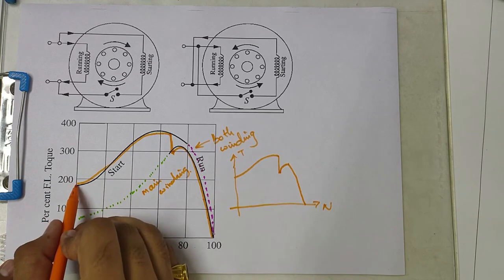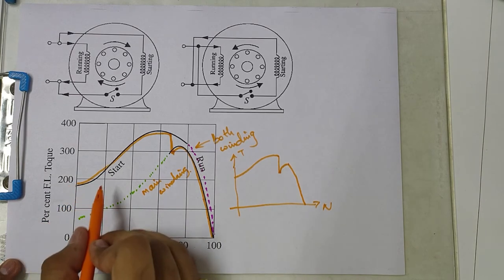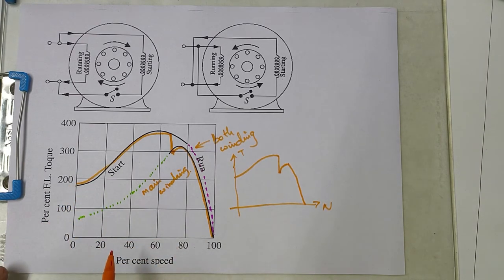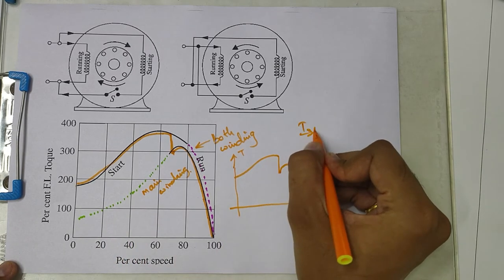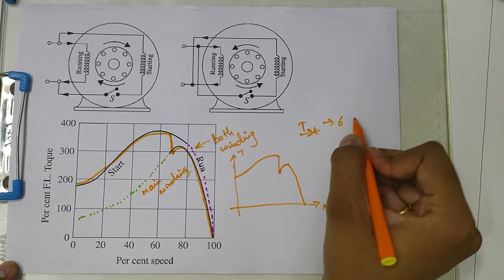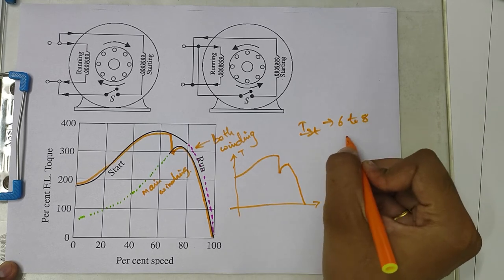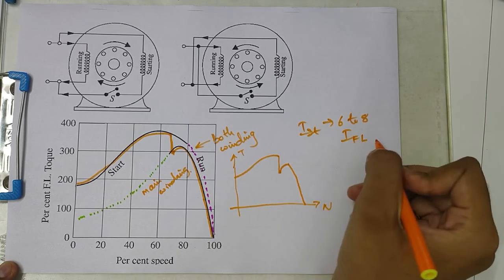The starting torque, as you can see here, is 150 to 200 percentage of full load torque, with a starting current of 6 to 8 times the full load current. The starting current is 6 to 8 times the full load current.